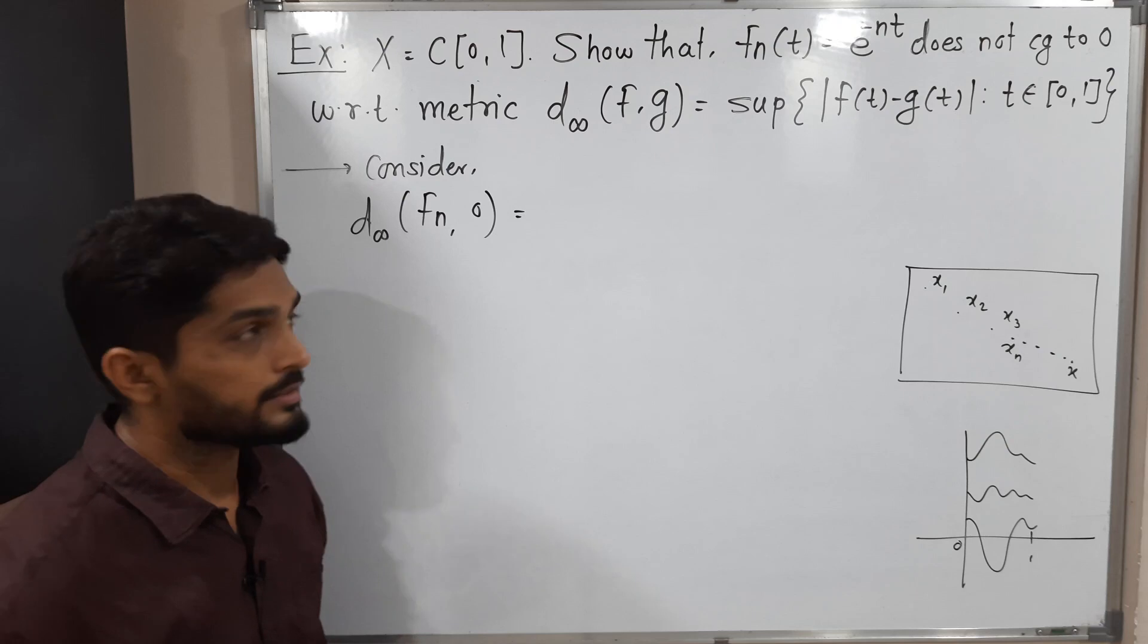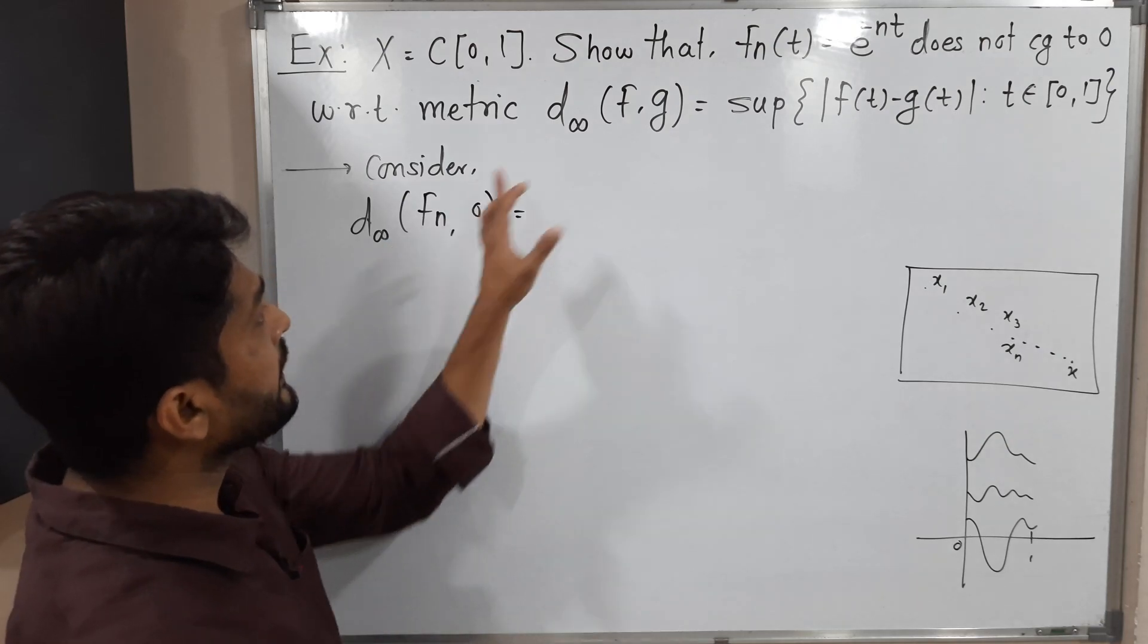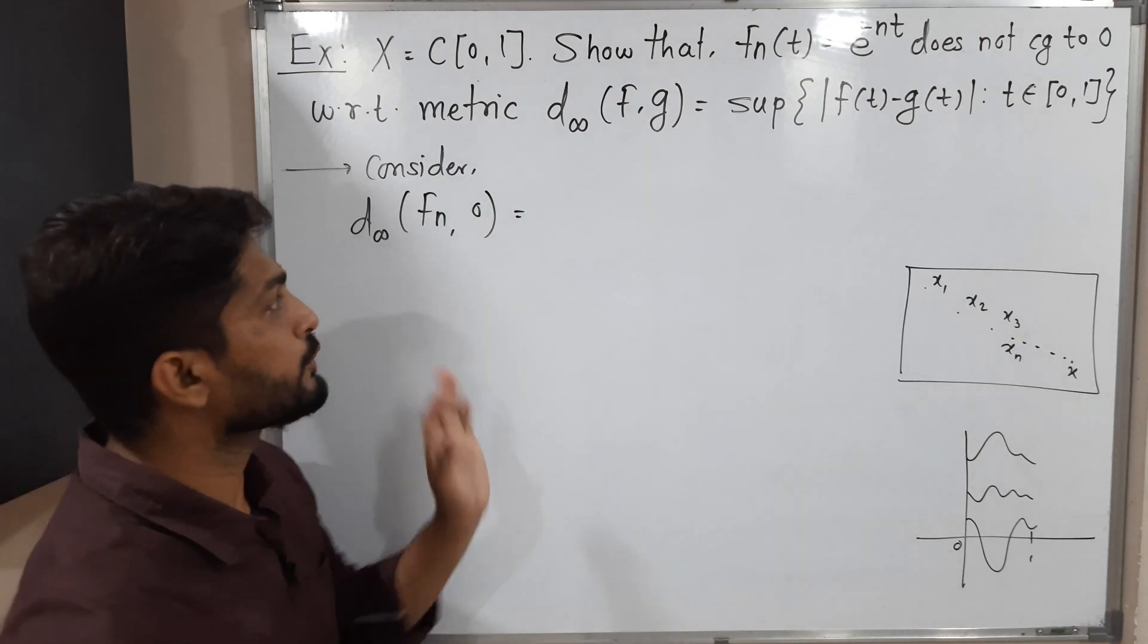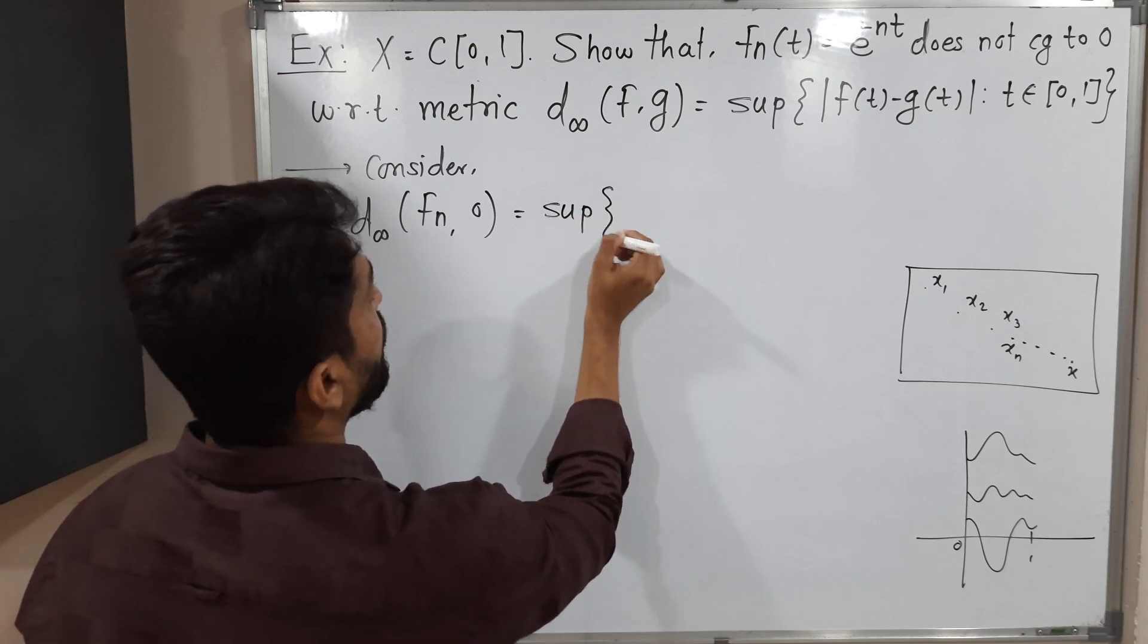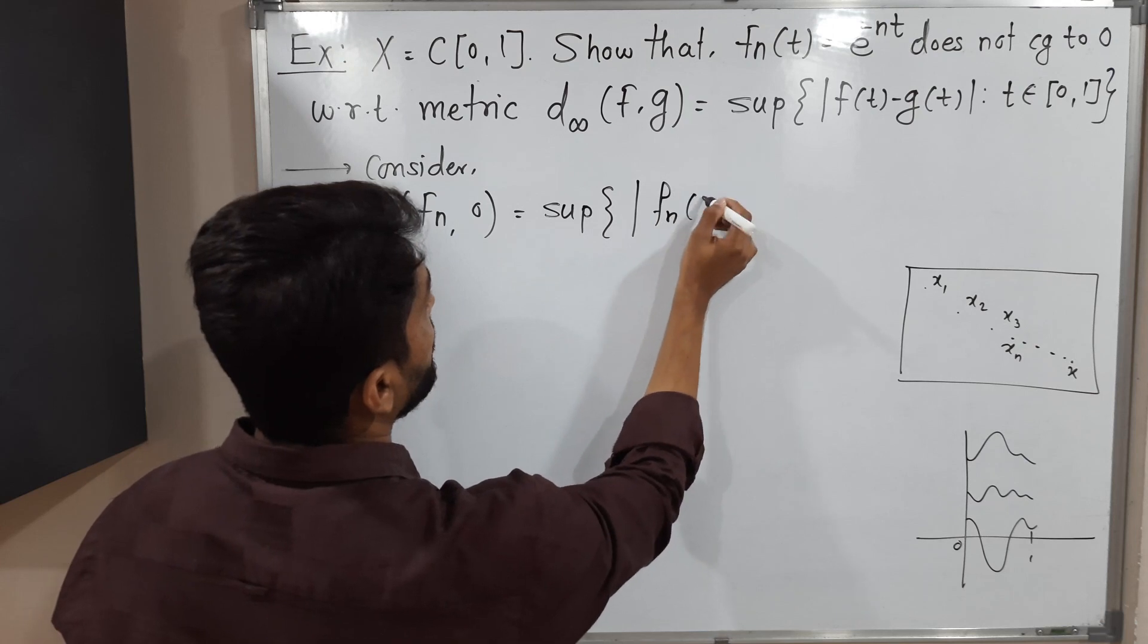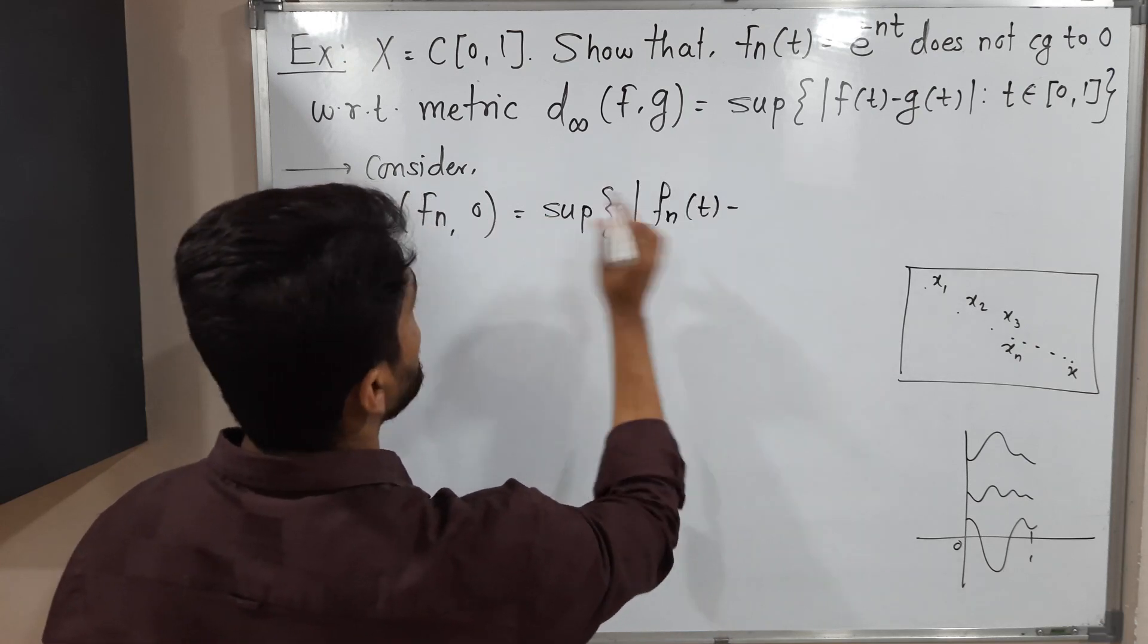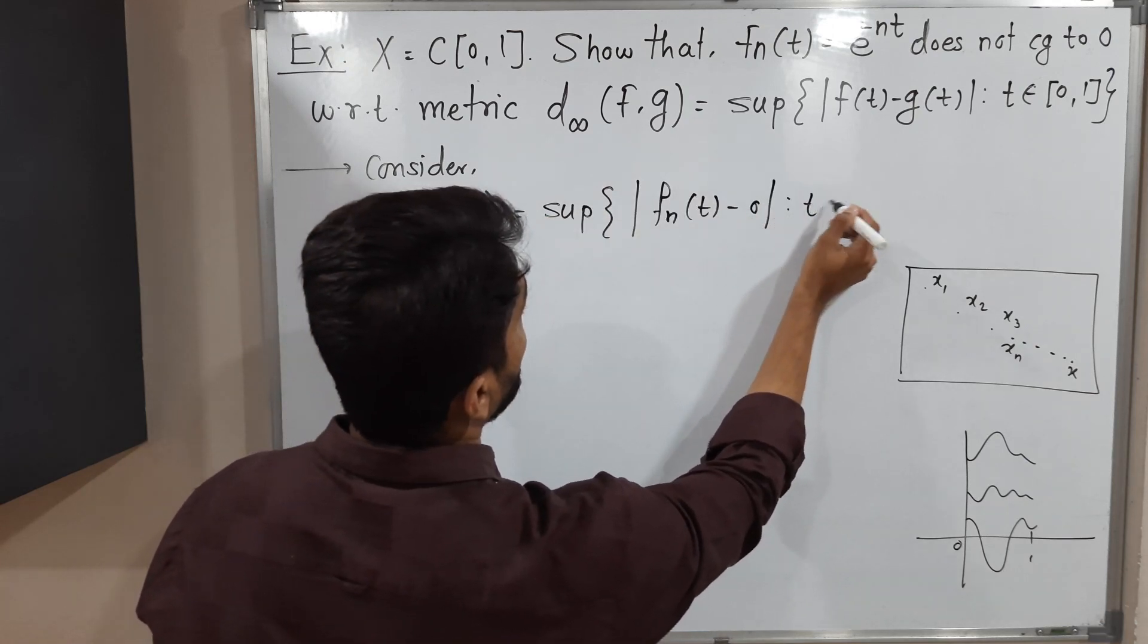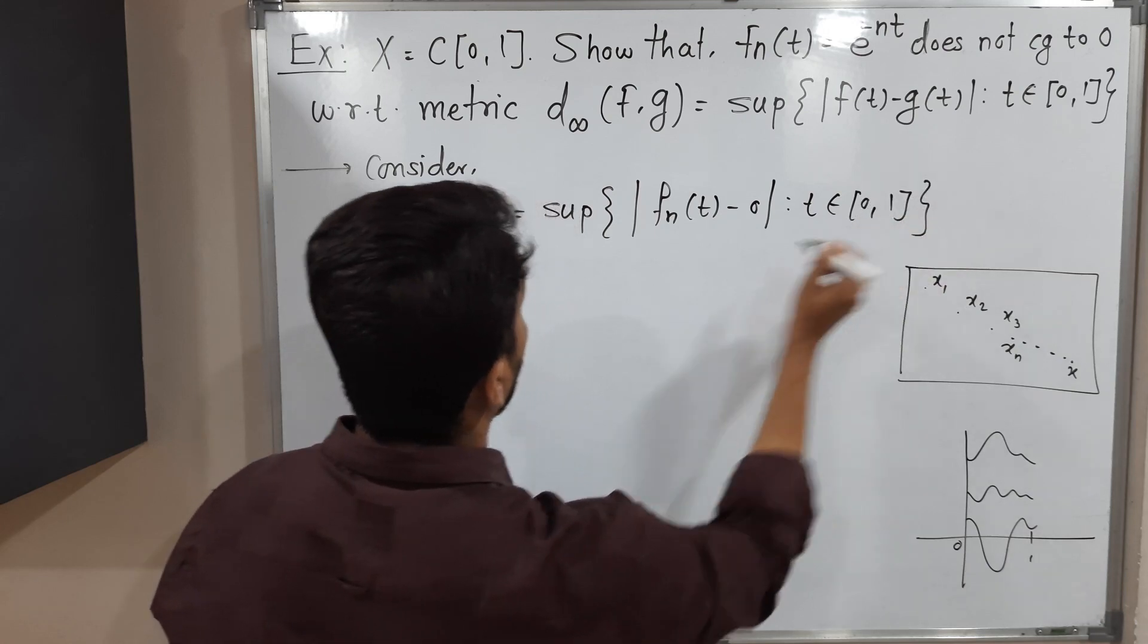So we are going to find the distance. D∞ is defined in this way, so I should follow the definition. Supremum of |Fn(t) - 0| where t belongs to closed interval [0, 1].